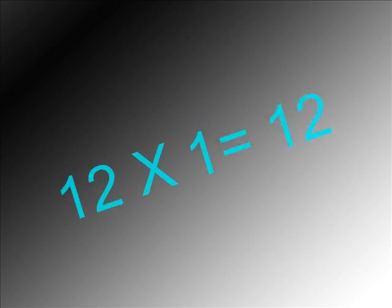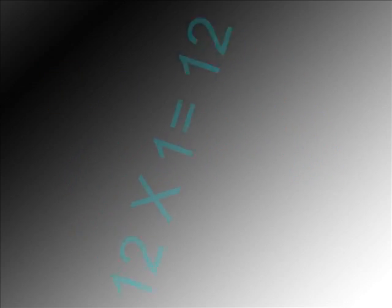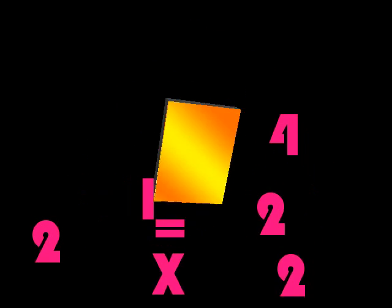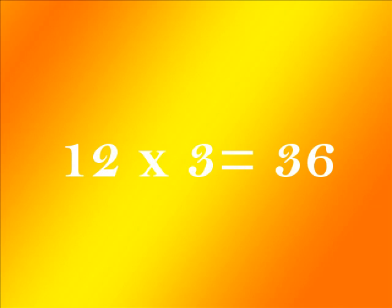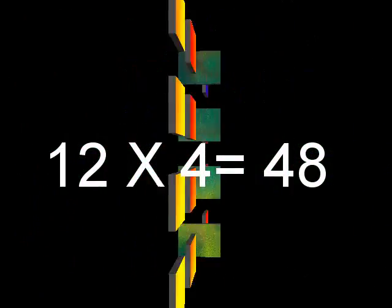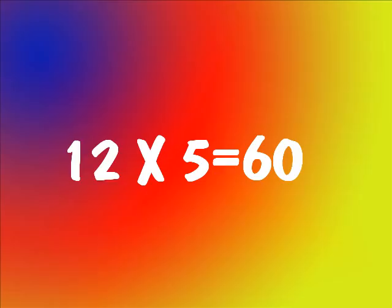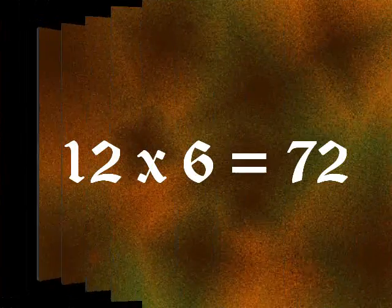Here we go. 12 times 1 is 12. 12 times 2 is 24. 12 times 3 is 36. 12 times 4 is 48. 12 times 5 is 60. 12 times 6 is 72.